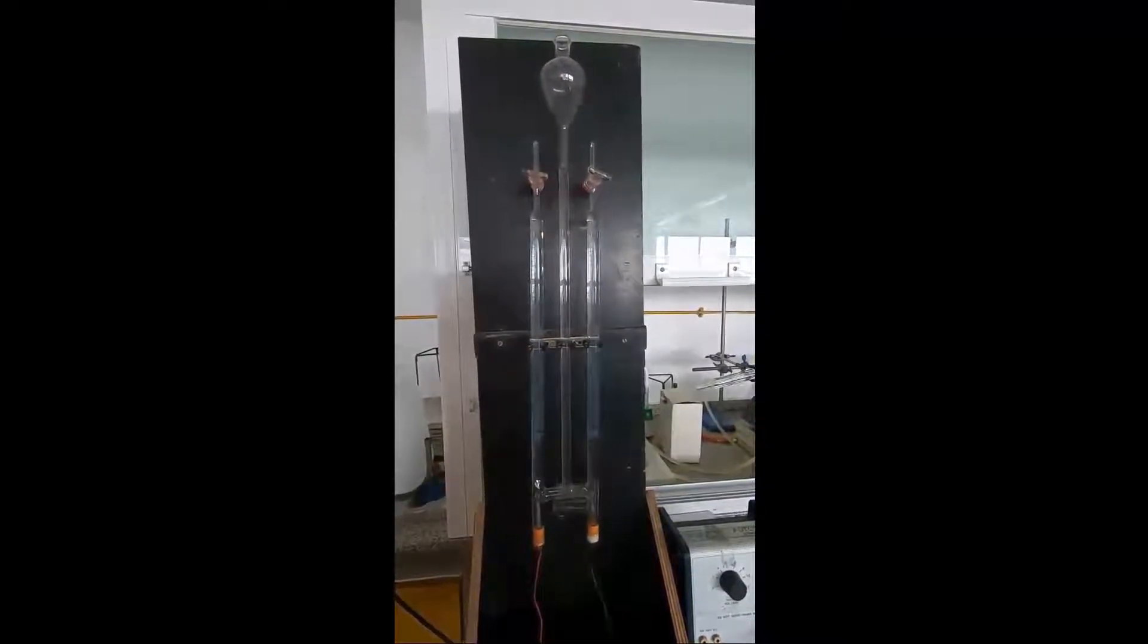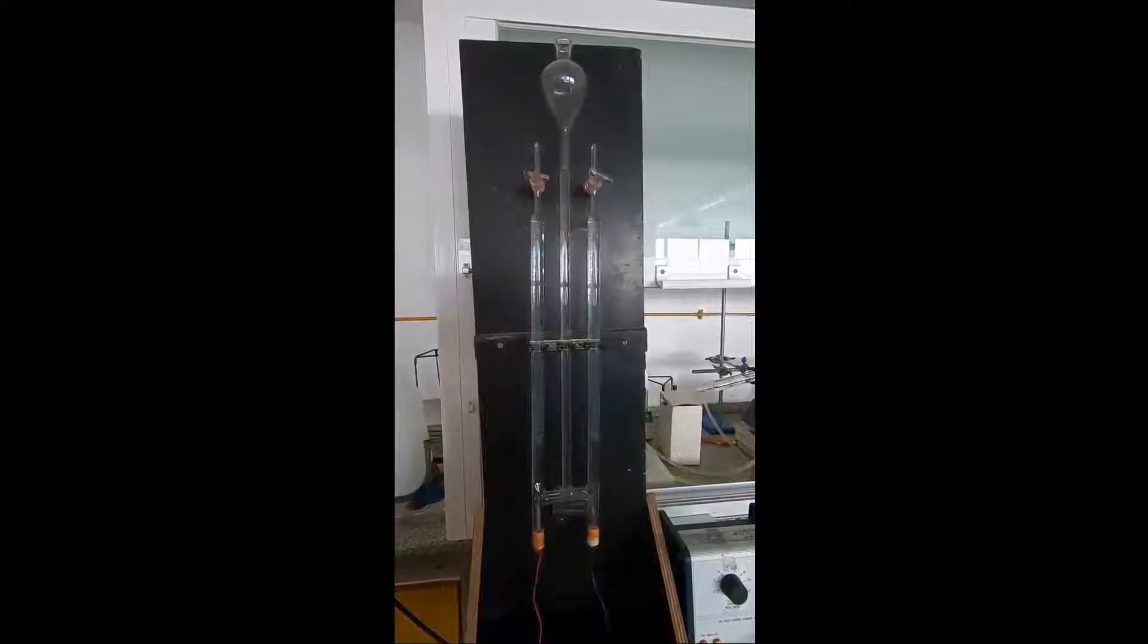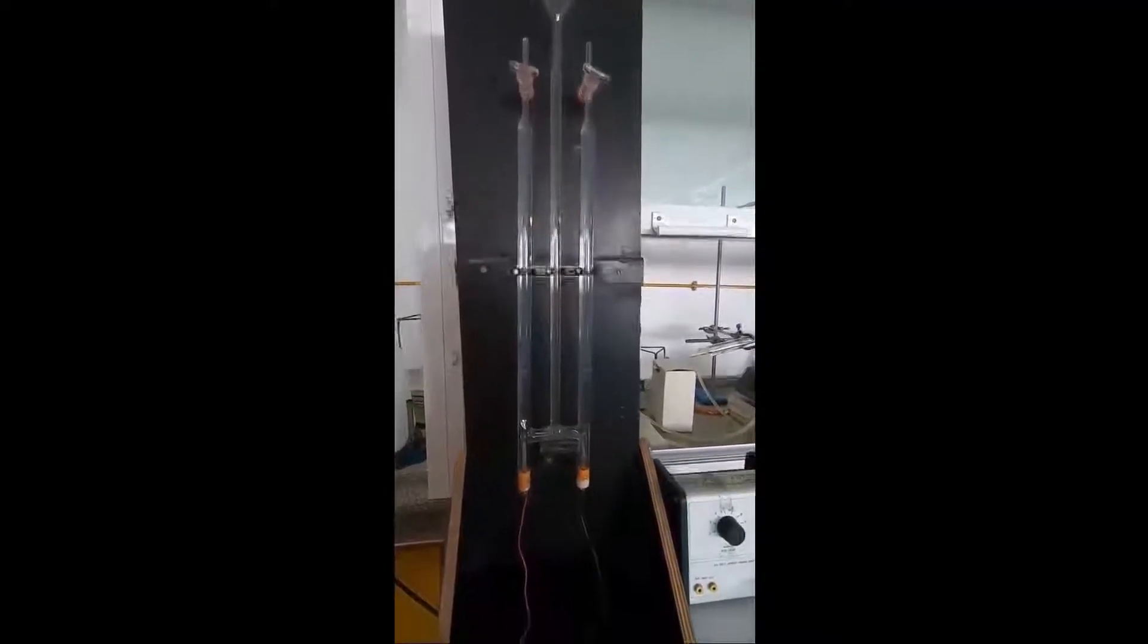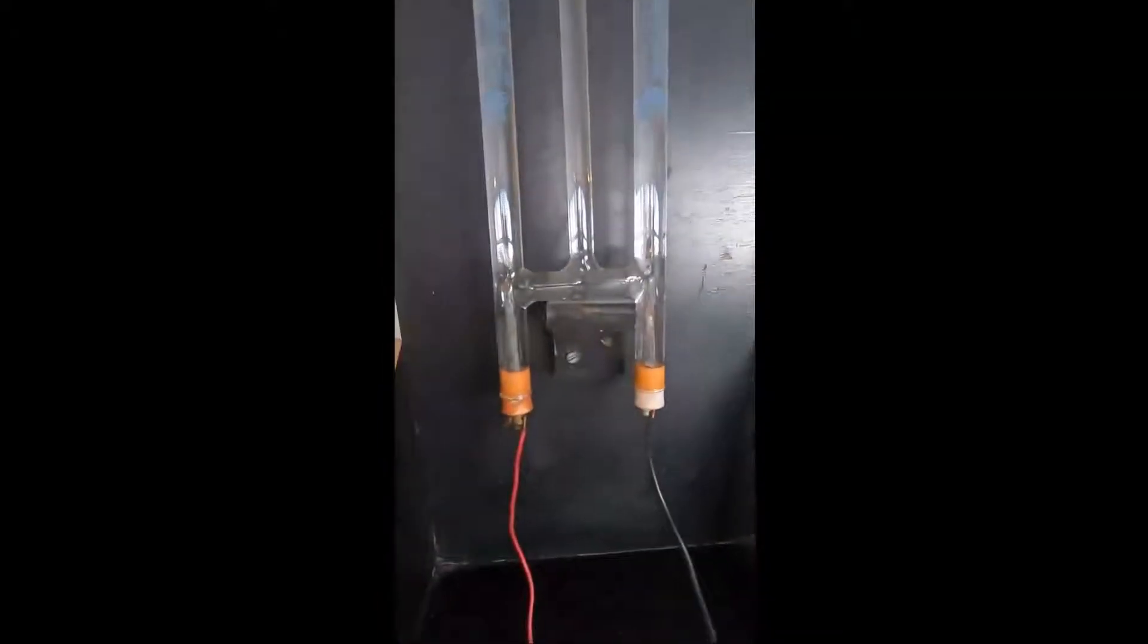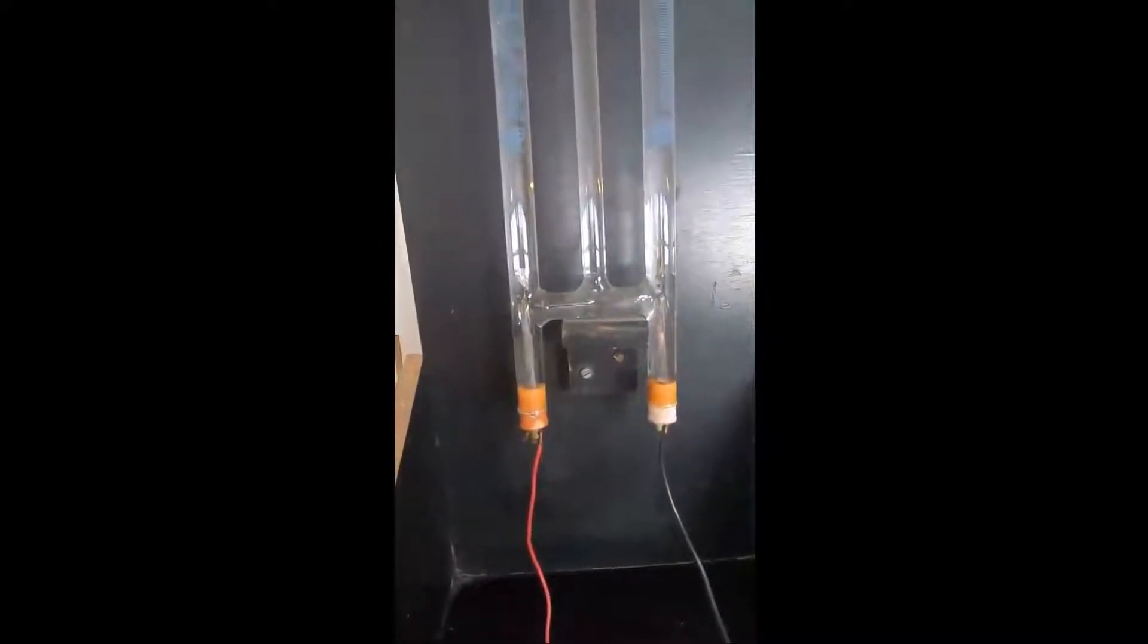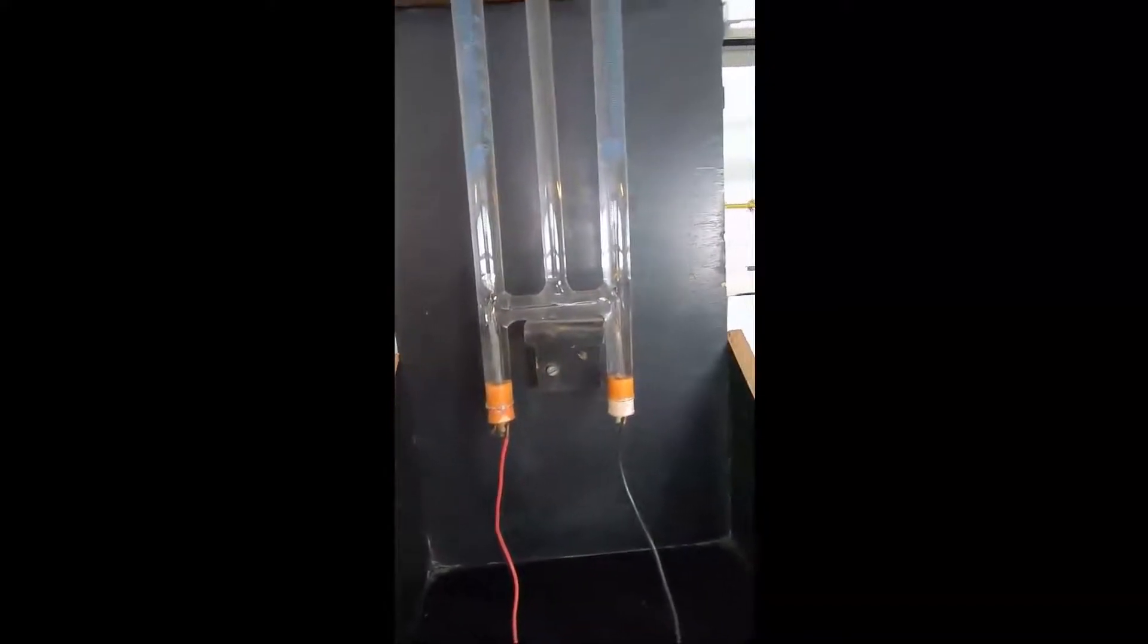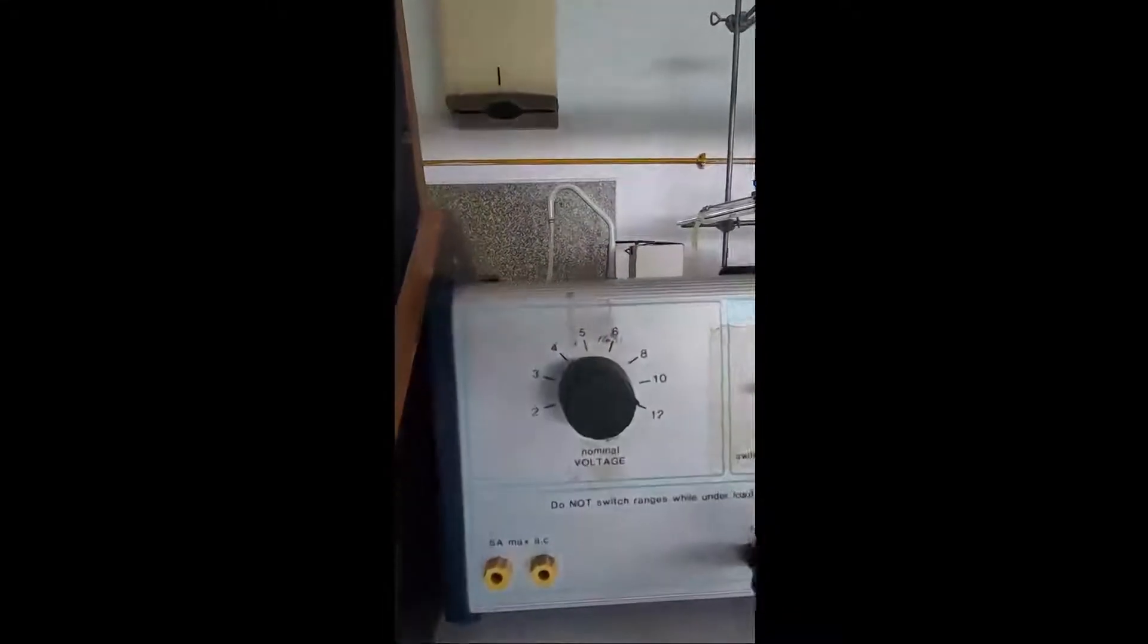This is the Hoffman voltameter. It's used to pass electricity through water. Down at the bottom we have two electrodes: a positive, which we'll make red, and a negative, which we'll make black. We're going to connect that to the low voltage supply over here. We can vary the voltage; we need to actually use quite a high voltage—we can use 12 volts.